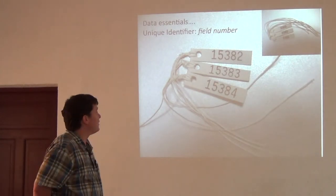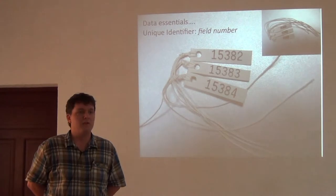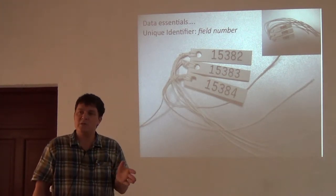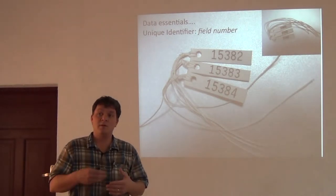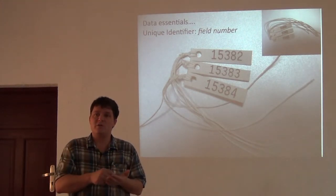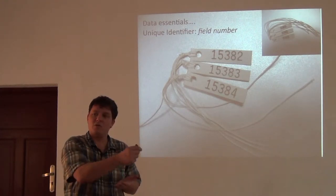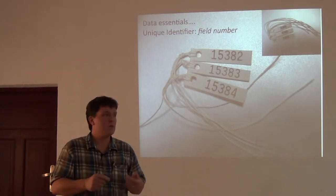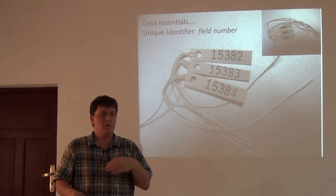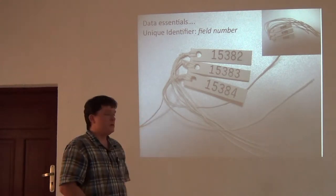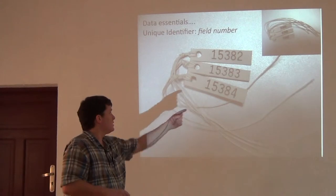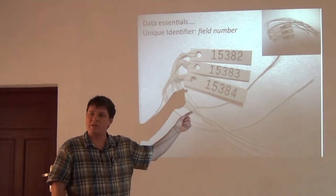We start with a unique identifier — every individual specimen gets a field number. This is really critical: every single specimen gets a unique number, because throughout however we use these data — manage, analyze, curate, and publish — this will be the unique identifier. In the field, you'll write down the field number that corresponds to your photograph, your recording of that frog, your color notes, and your skin sample for chytrid. This is the one number you're always going to keep going back to. We might assign another number when it gets curated in a museum, like a California Academy of Sciences institutional catalog number, but this field number is what everything links back to.